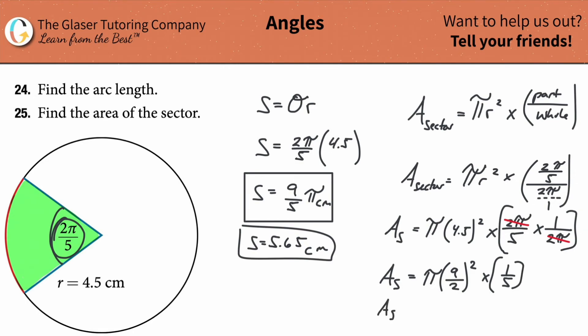Now just do the math. This is going to be π multiplied by, when you square 9 over 2, it's 81 over 4. Don't forget to square both of them. And then multiply that by one fifth. So this is simply 81 on the top divided by 20 on the bottom, and then the pi comes along for the ride. You can plug that all into your calculator if you want it, but this is the exact answer for the area of this particular sector.